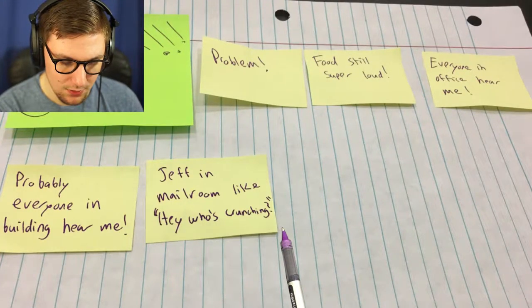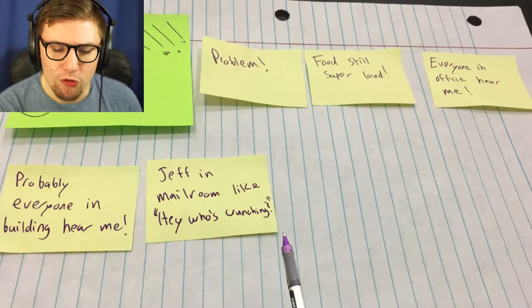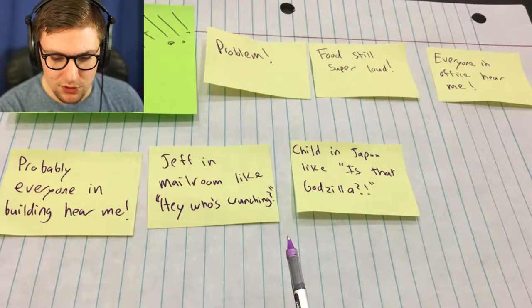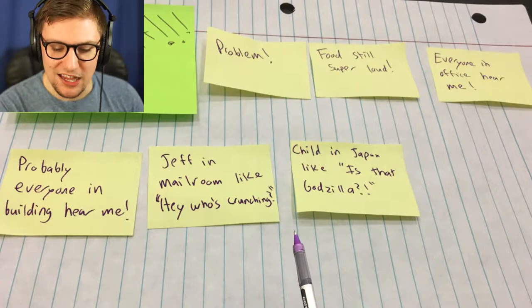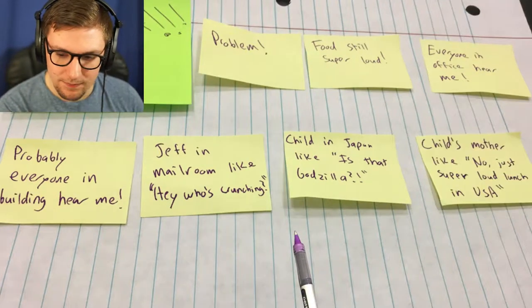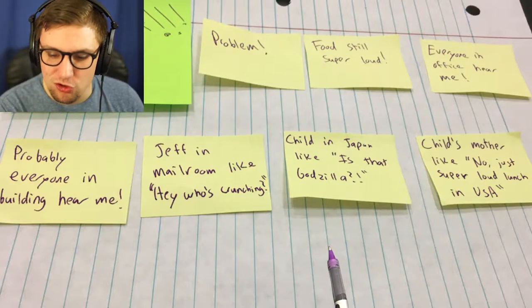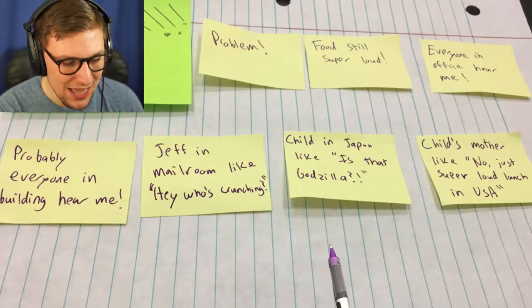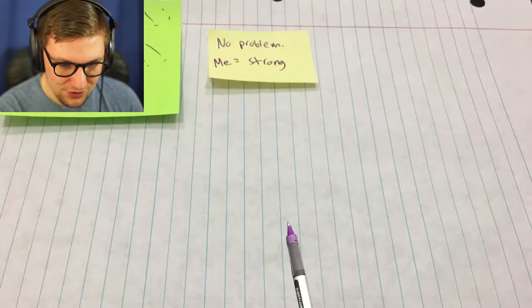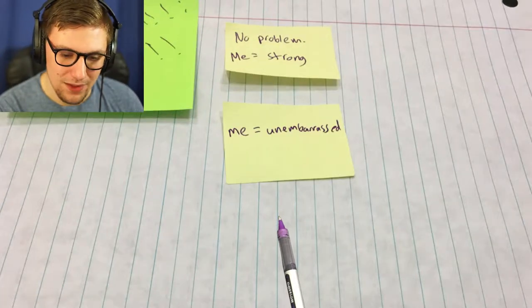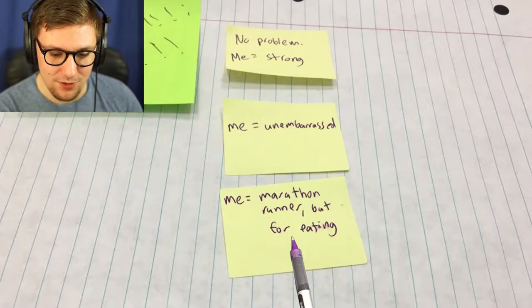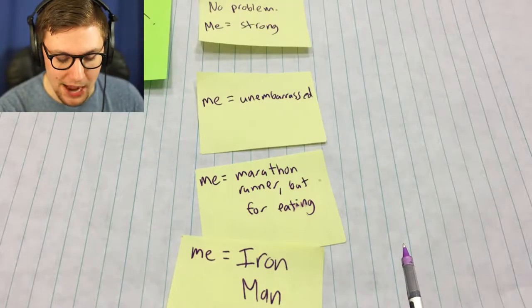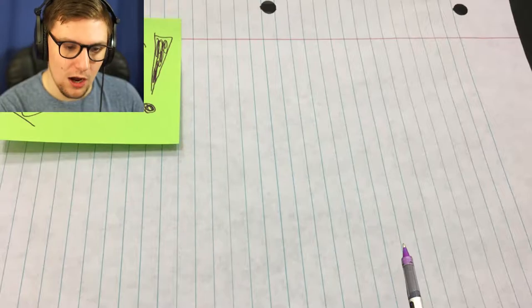I don't know why I made him Italian, but we're going with it. Children in Japan are like, is he Godzilla? Children's mother like, no, no. He's super loud. You know, they lunch loud in the US. Crunch. No problem. Me equals strong. Me equals unembarrassed. Me equals marathon runner, but for eating. Me equals Iron Man.